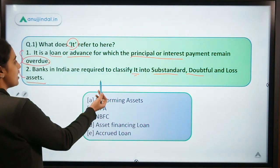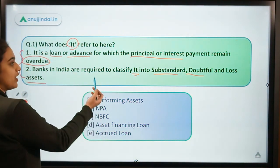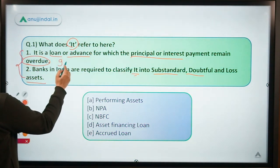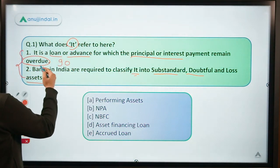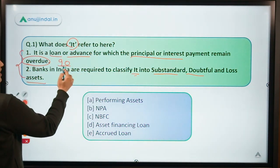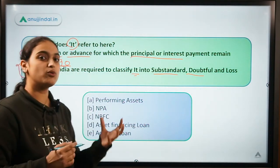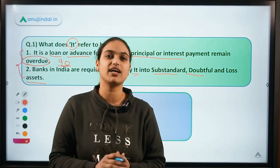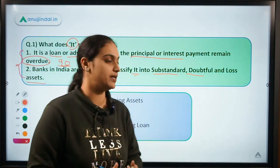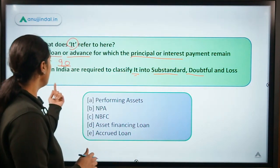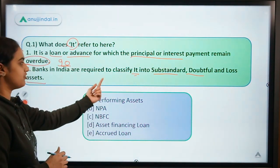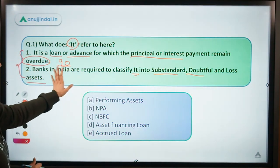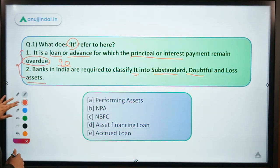These are loans or advances on which the amount is overdue. In India, the overdue time has been specified as 90 days. If the amount is overdue beyond a period of 90 days, then we categorize it as an NPA. Further, they talk about the classification of NPAs — in India we have to classify NPAs into three categories.